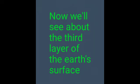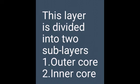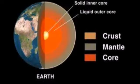Now we shall see about the third layer of the earth's surface, called the core. This layer lies below the mantle and is divided into outer core and inner core. The outer core is composed of iron and nickel, and extends from around 2,900 kilometers to 5,100 kilometers. The temperature of the liquid outer core is around 5,000 degrees Celsius.